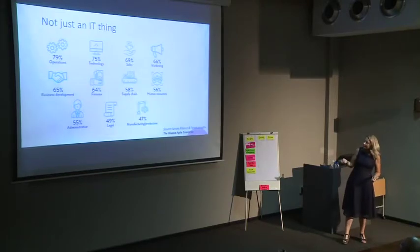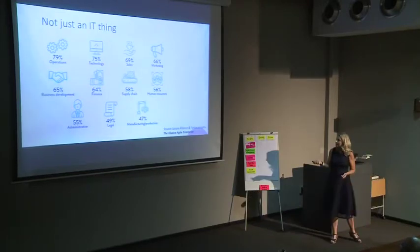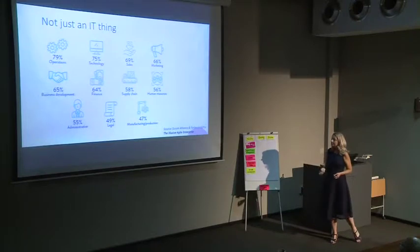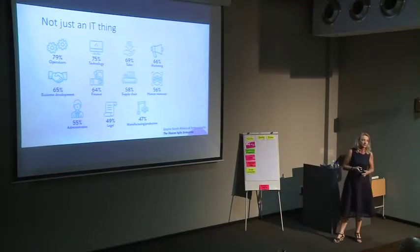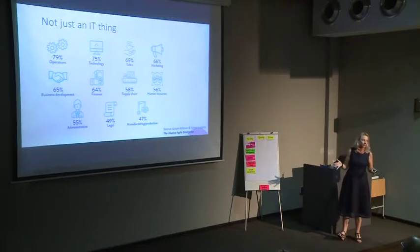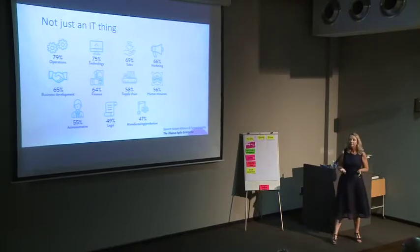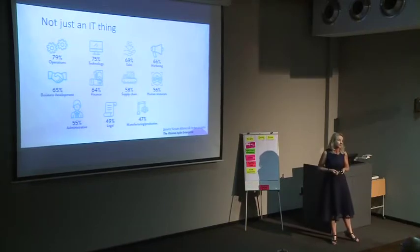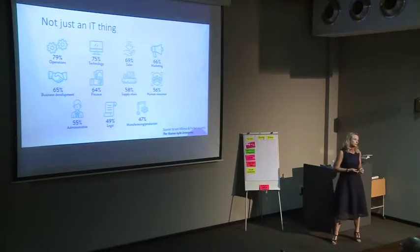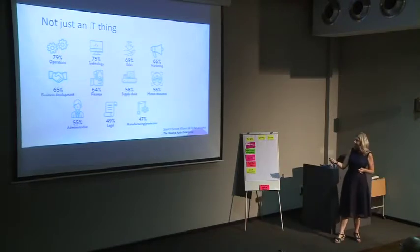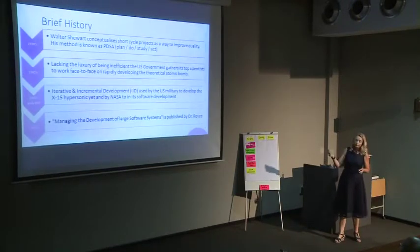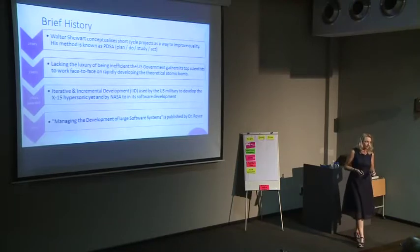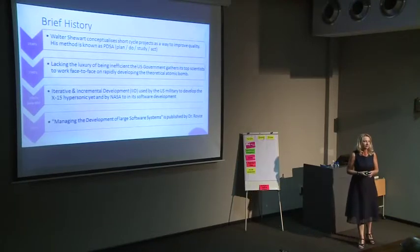Agile is not just an IT thing. This comes from a paper written by the Scrum Alliance and Forbes Insights — a global study with over a thousand companies. They don't just use Agile in IT anymore; it's across different business units. And Agile is not just a new concept — it probably started in the 1930s. I'm sure you've heard of the Plan Do Study Act model, where people continuously look at how to improve their projects.